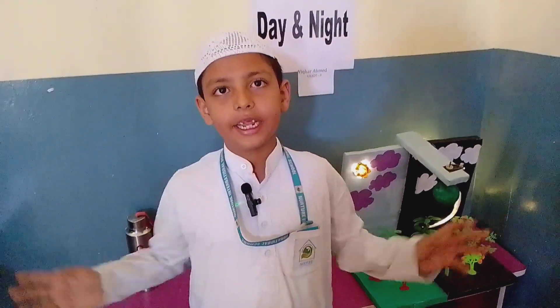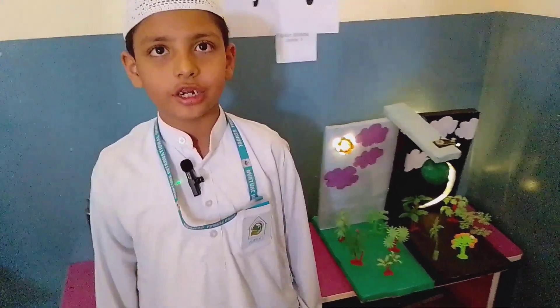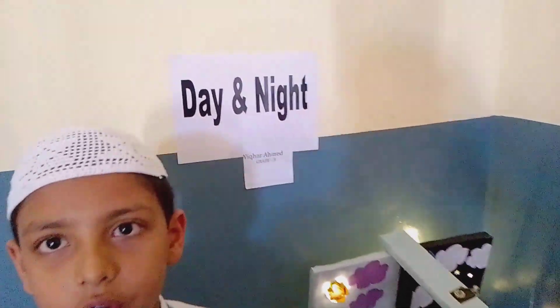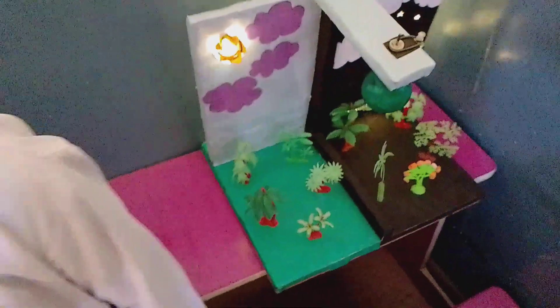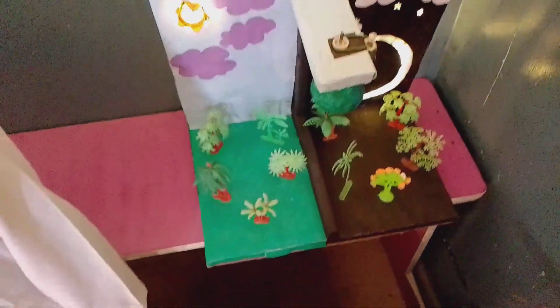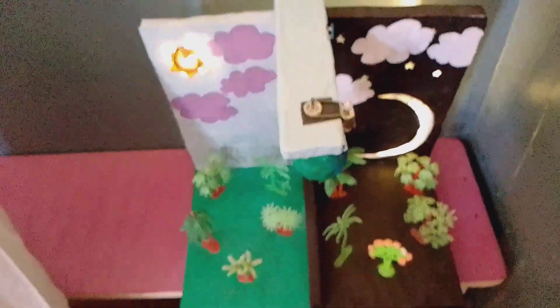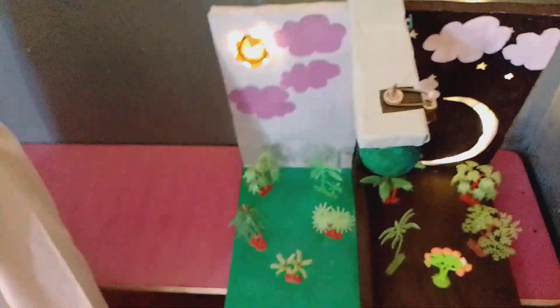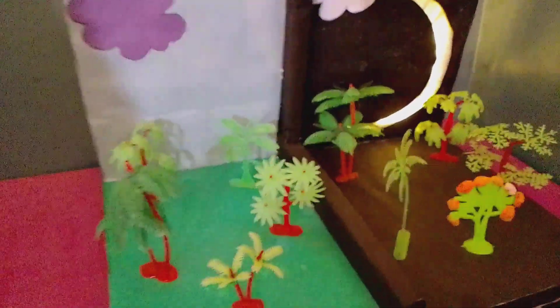I am Akhar Ahmar from Grade 3. Today I am going to speak about day and night. Days and nights are caused by the rotation of the Earth. The sky appears blue during the day and black at night. The night appears black because there is no sunlight. The moon is the brightest object in the night.